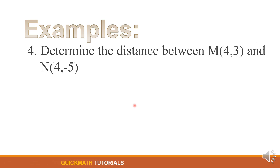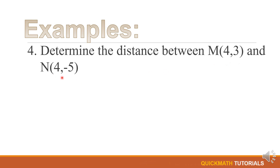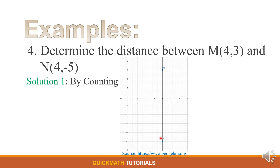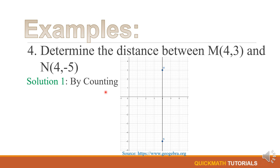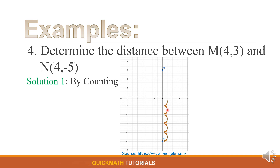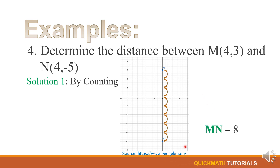For our last example, let's determine the distance between point M, (4, 3), and point N, (4, -5). If we will graph these two points, we will have a vertical line. For our first solution, we can use counting. You can start counting from N to M or from M to N — 1, 2, 3, 4, 5, 6, 7, 8. Therefore, the distance between M and N is equal to 8.